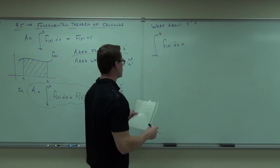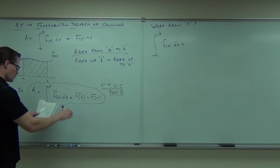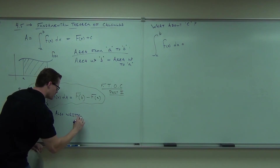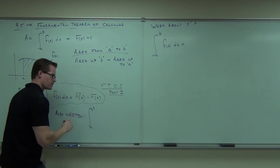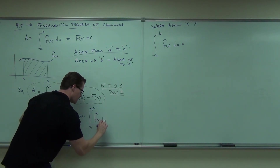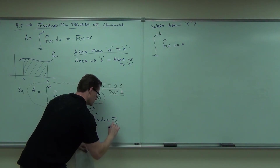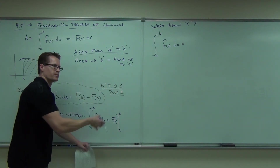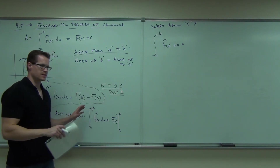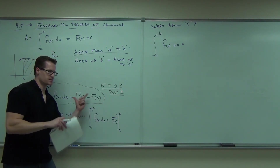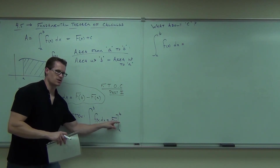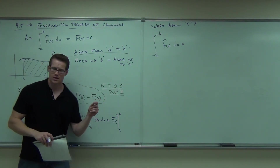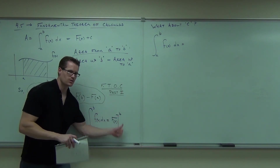By the way, the way that you write this — this is also written as F of X with an evaluation symbol from A to B. That's how you can write that, and we're going to be practicing that as well. It says the same thing. How you do this is you plug in B and you subtract off A — you plug in B to your antiderivative and subtract off F of A. So you see that line right there? It's like half a bracket — it goes from A to B.